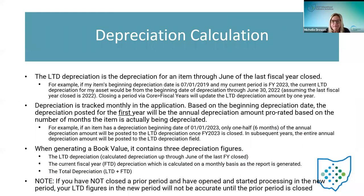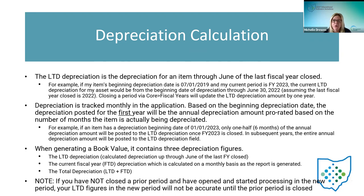The life-to-date depreciation is depreciation for an item through June of the last fiscal year closed. For example, if the item's beginning depreciation date is 7-1-2019 and you're currently in fiscal year 23, the current life-to-date depreciation for that asset would cover from that beginning date through June 30th, 2022, which is fiscal year 22.